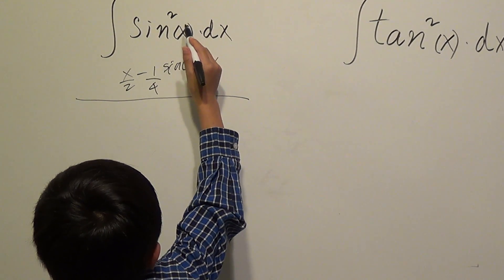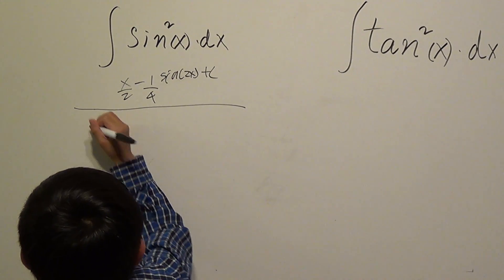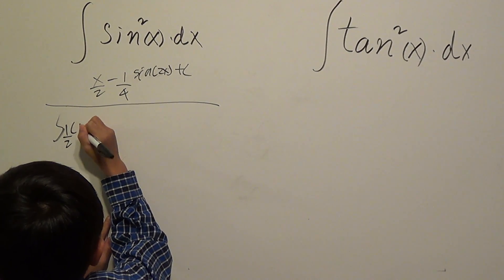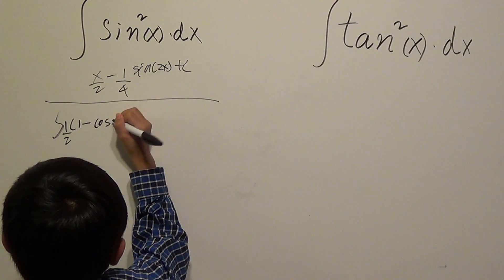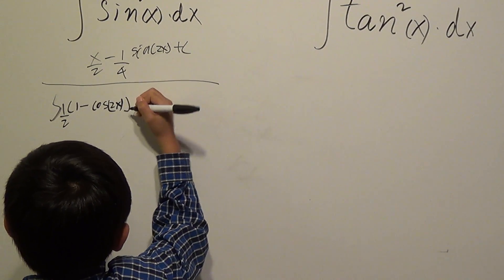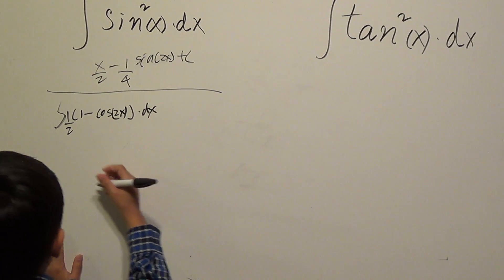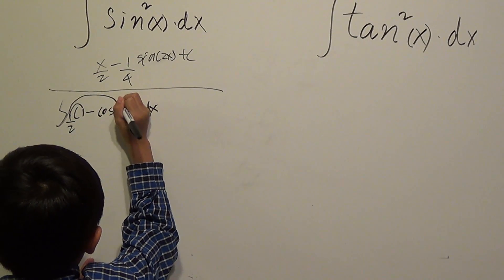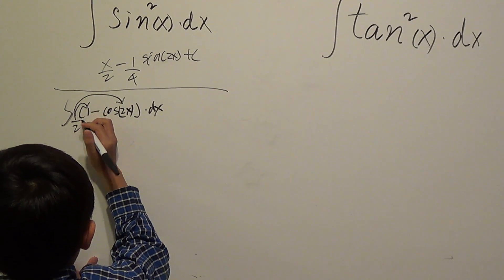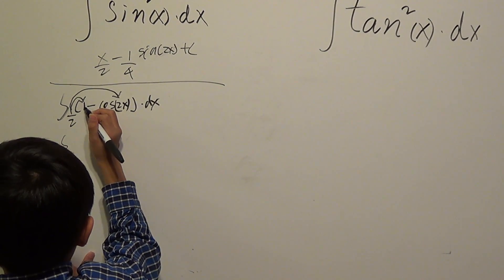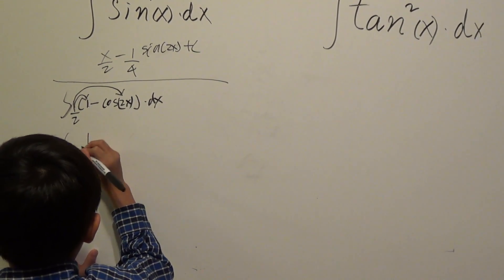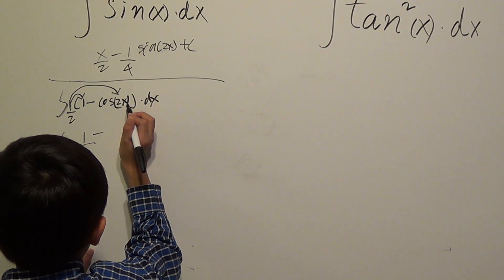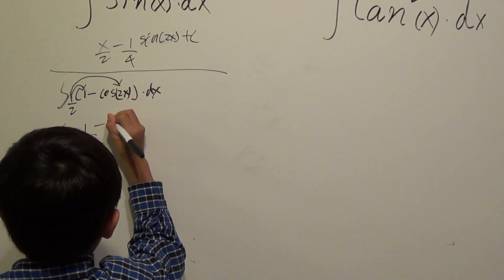First of all, I change sin power of 2 into something different. I change it into this: 1 over 2 parenthesis 1 minus cos 2x. Now I dot this into here and this into here. So 1 over 2 dot 1 is 1 over 2, minus 1 dot cos 2x is 1 over 2 cos 2x.